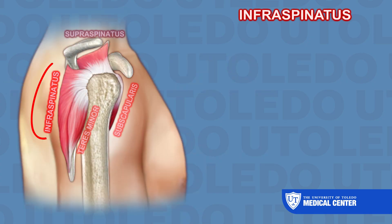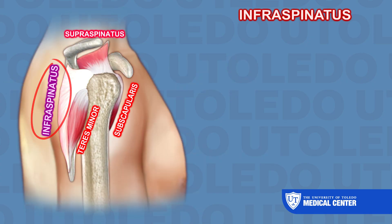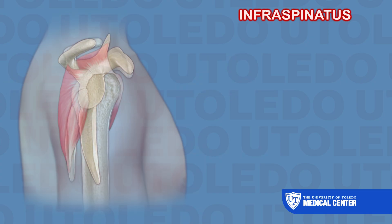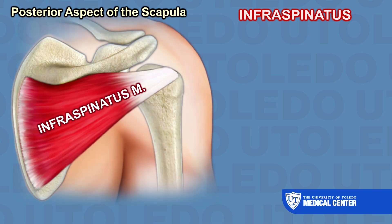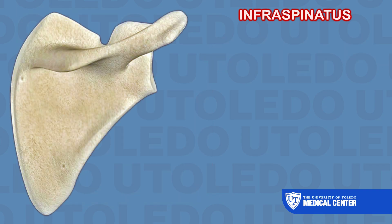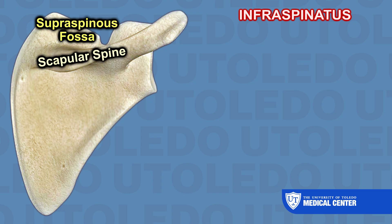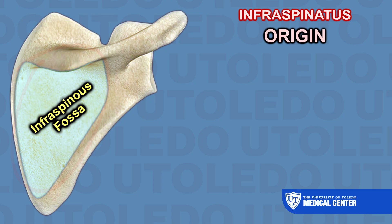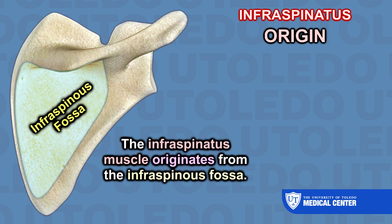Now let's talk about the infraspinatus rotator cuff muscle. The infraspinatus is a thick, triangular-shaped muscle that lies on the posterior aspect of the scapula. The supraspinous fossa is located above the scapular spine, and the infraspinous fossa is below it. The infraspinatus muscle originates from the infraspinous fossa.